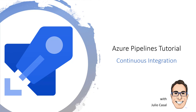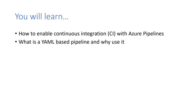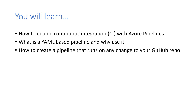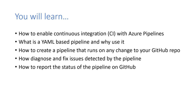Welcome! Today I'll show you how to create a continuous integration Azure pipeline to automatically build and test all changes to your GitHub repository. You will learn how to enable continuous integration, also known as CI, with Azure Pipelines, what is a YAML-based pipeline and why use it, how to create a pipeline that runs on any change to your GitHub repository, how to diagnose and fix issues detected by the pipeline, and how to report the status of the pipeline on GitHub.